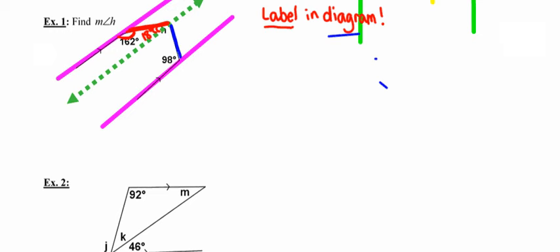Now looking at the blue transversal, it intersects the green parallel line and the purple parallel line. The angle measuring 98 degrees is inside the parallel lines and is supplementary to the adjacent angle, making that angle 82 degrees. Angle H is made up of the 18-degree angle and the 82-degree angle. Therefore, the measure of angle H is exactly 100 degrees.